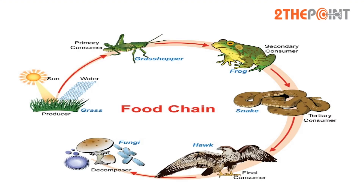Now let's look at food chain. Organisms in an ecosystem are related to each other through feeding mechanisms — one organism becomes food for the other. A sequence of organisms that feed on one another forms a food chain. A food chain starts with producers and ends with top carnivores.